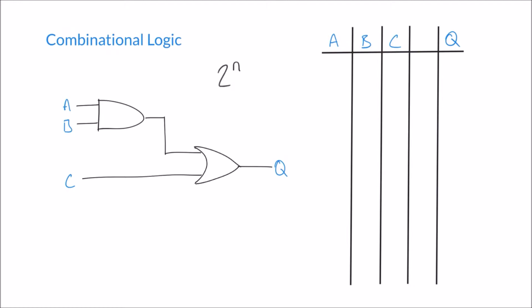We know that there are 8 possible combinations. Let's start with column A. For the half and half rule I'm going to make half of them 0, so that's 4 zeros, and I'm going to make half of them 1, so 4 ones.